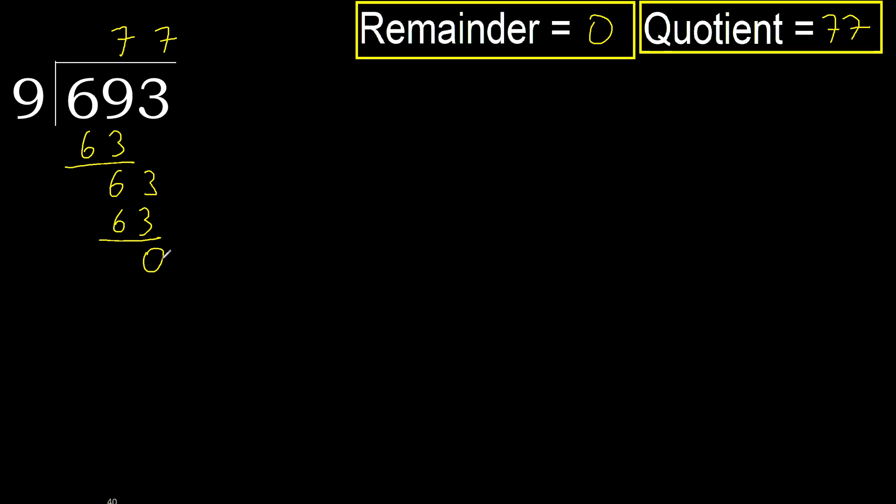0 remainder, therefore 693 divided by 9 is 77.